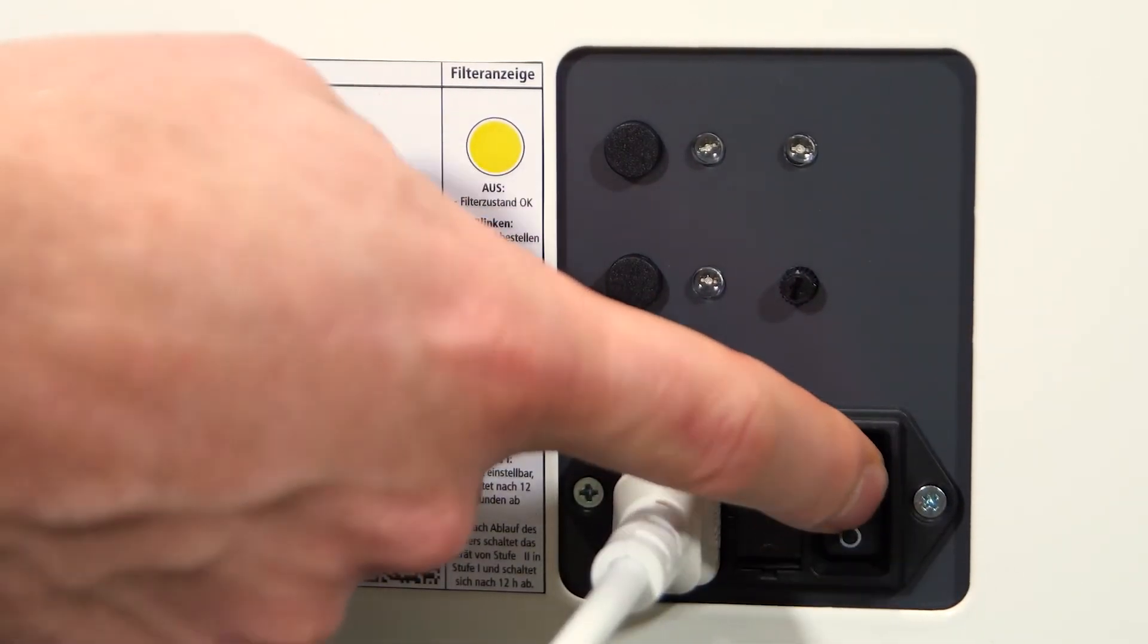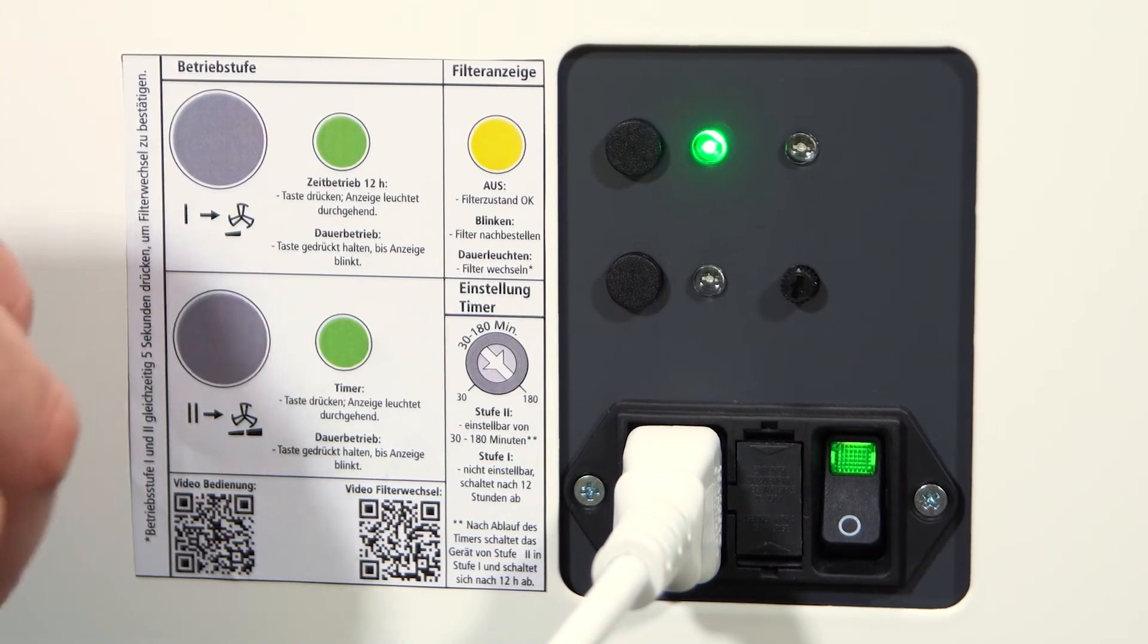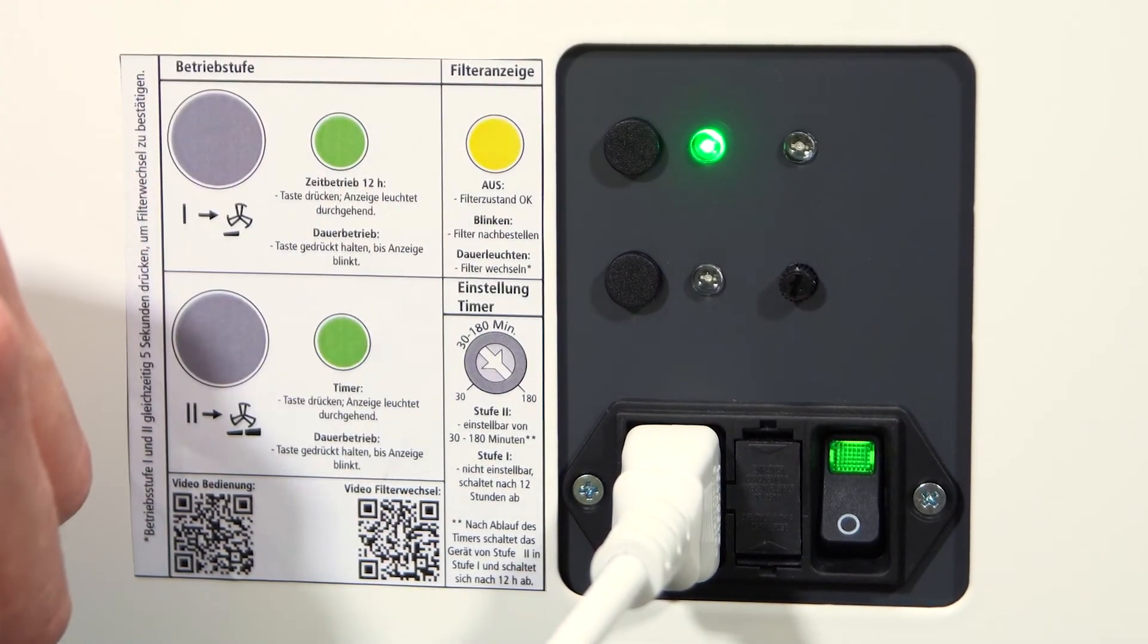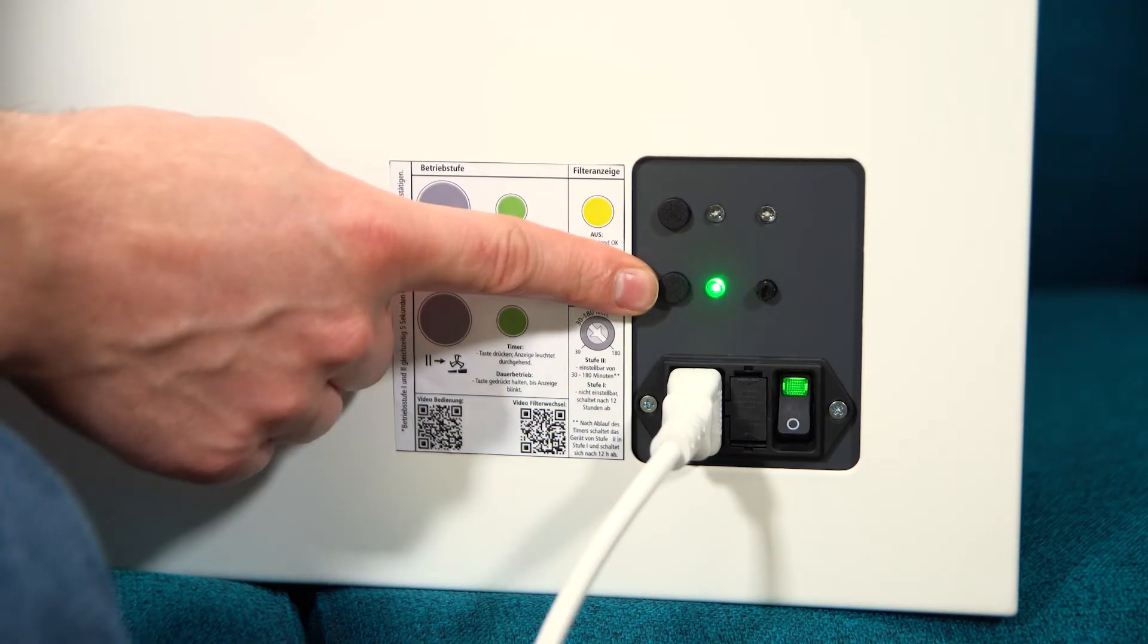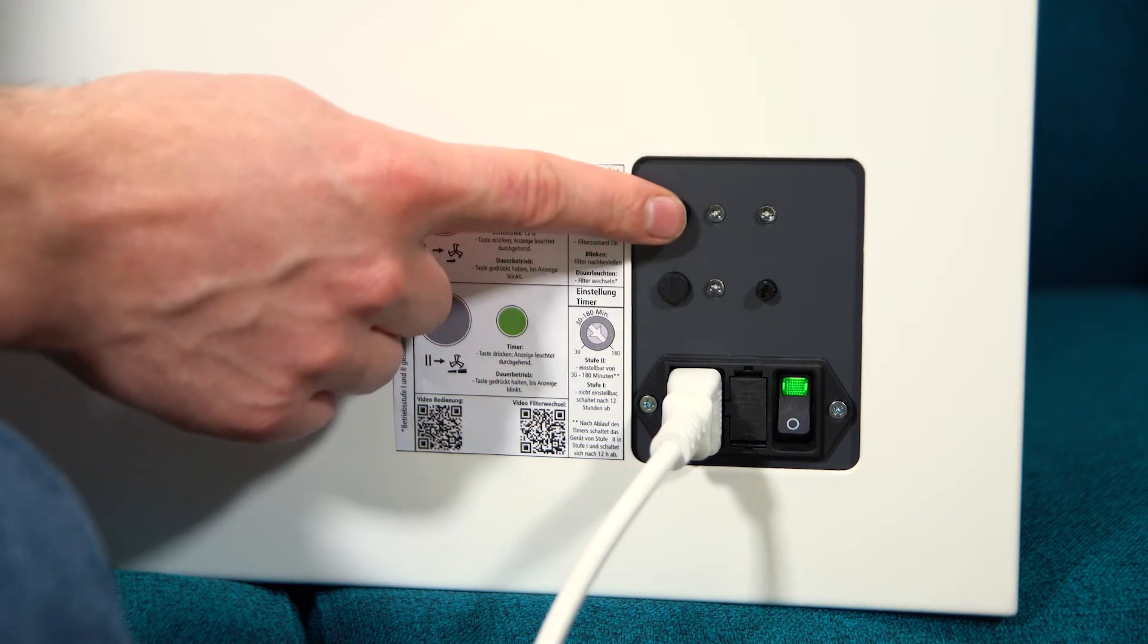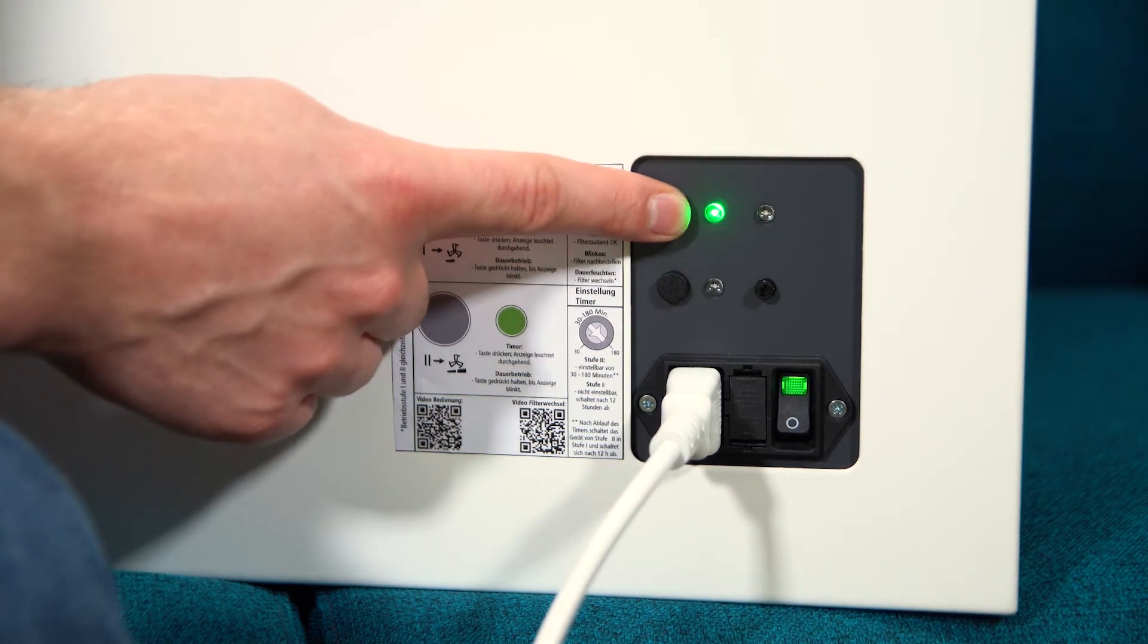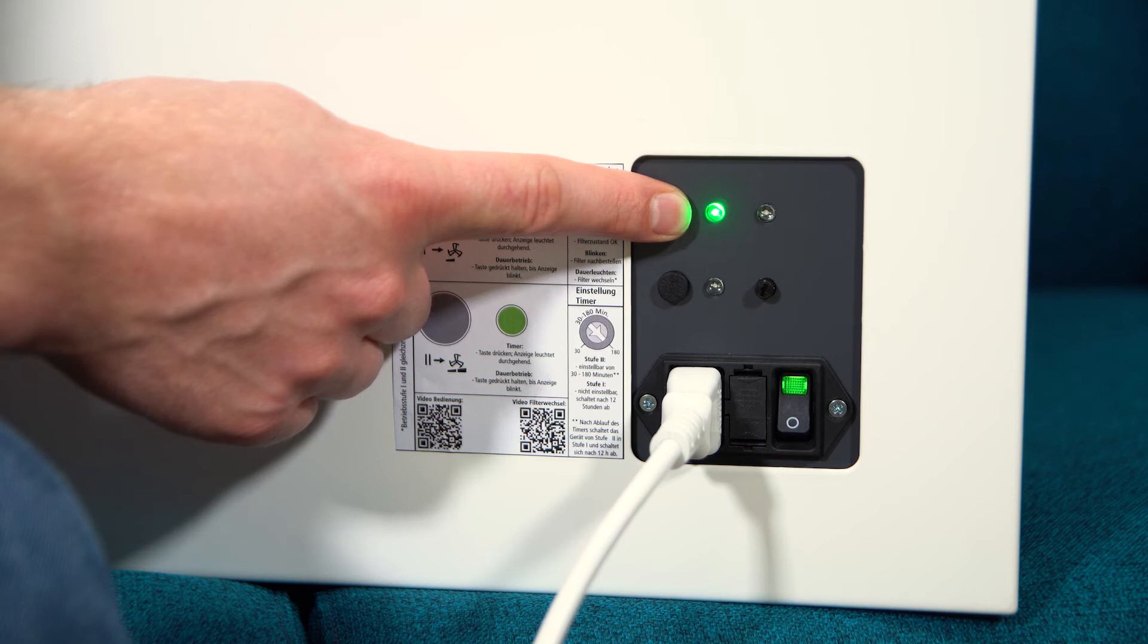When switching on, the air purifier always starts at operating level 1. A continuous operation is of course also possible at operating level 1. Again, press the button and hold it down until the green LED flashes.